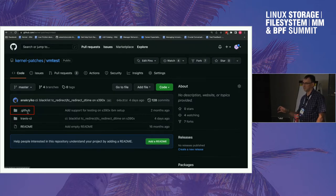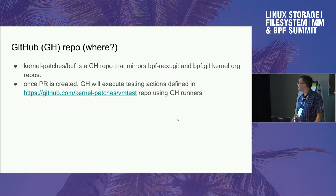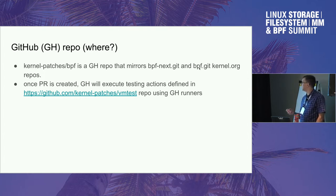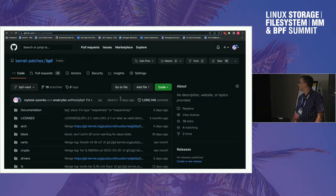Inside it has step definitions — how to execute tests, what to do, everything. We added kernel-patches-vm-tests and kernel-patches-bpf repos. kernel-patches-bpf is just a GitHub repo that mirrors BPF-next and BPF git repositories from kernel.org periodically. Once a PR is created in this GitHub repo, GitHub will start executing tests defined in the VM test repository. This is just a screenshot of kernel-patches-bpf with a regular kernel tree — nothing special, no magic.